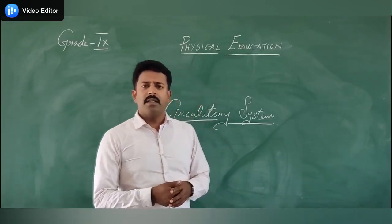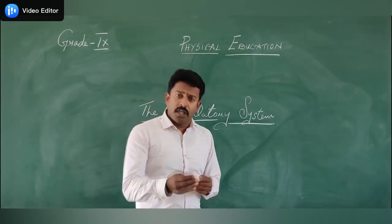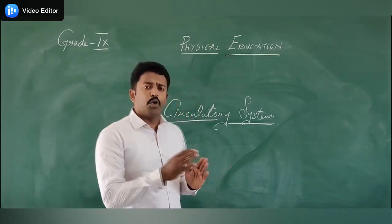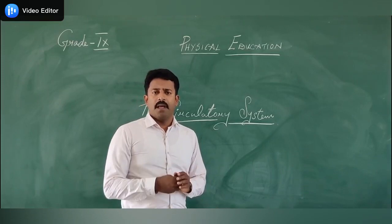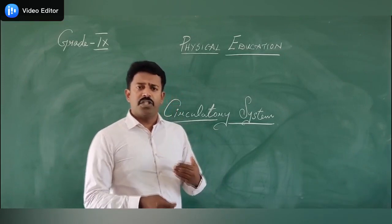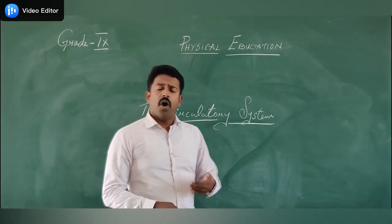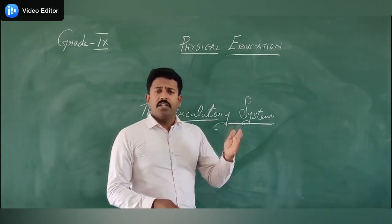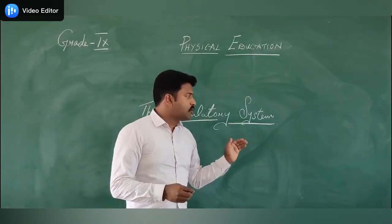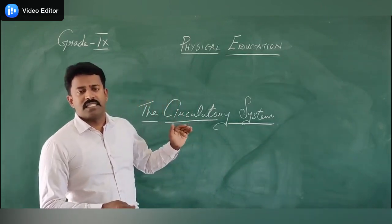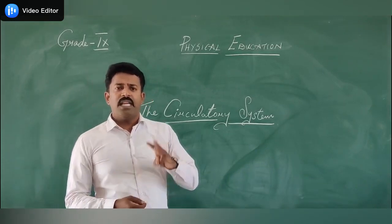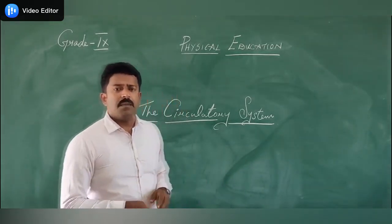oxygen, carbon dioxide, and removes toxic substances and transports them to all parts of the body. In other words, this is the process of movement of nutrition, enzymes, hormones, and toxic substances in a liquid state. It is also called the circulatory system.